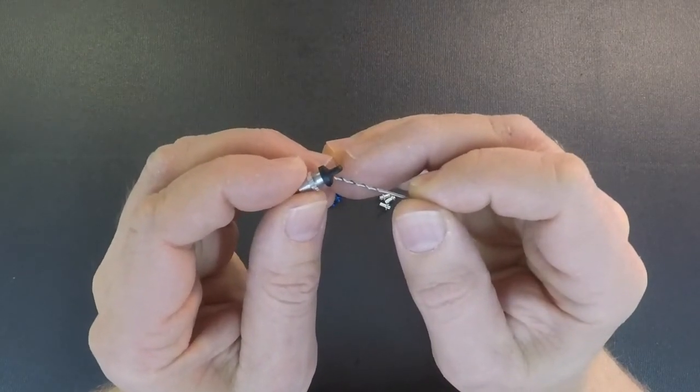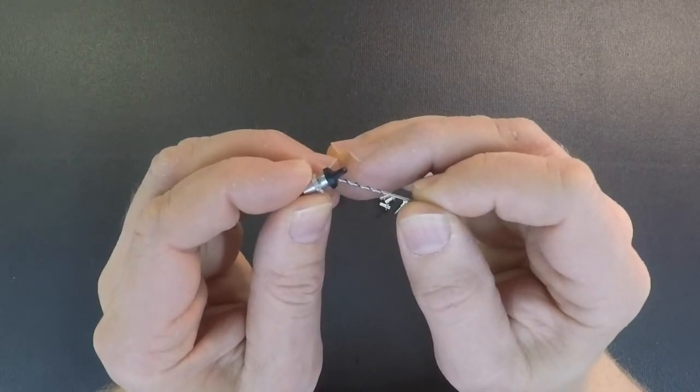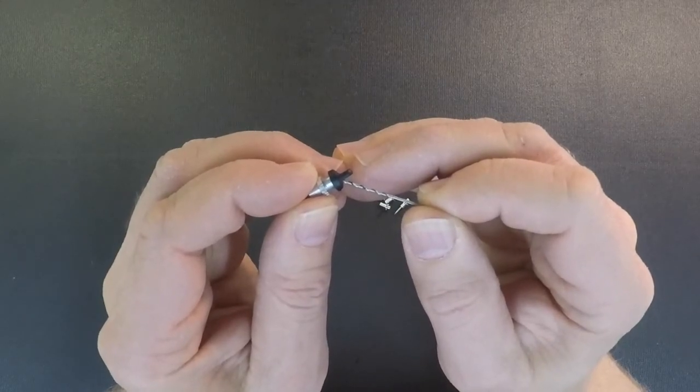And what we recommend doing is put the shock cap on the shock body, and then you're going to want to drill it right in this corner right here at about a 45 degree angle.